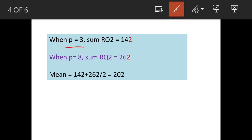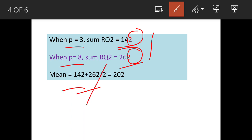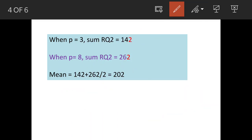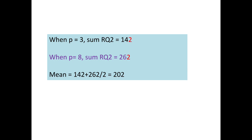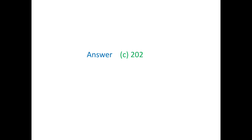We got two values of p — p=3 and p=8 — giving resultant sums with 2 at the unit place. The arithmetic mean of these two sums is (142 + 262) / 2 = 202. So 202 is our answer, which is option C. Hope it is clear. Thank you very much and thanks for watching.